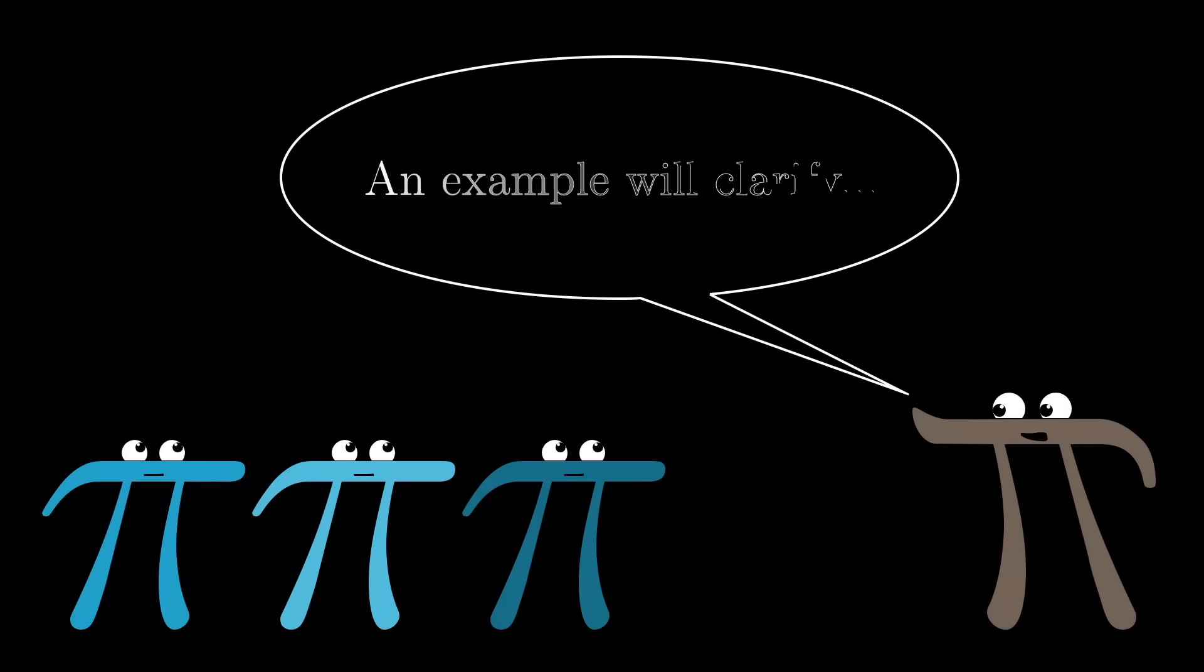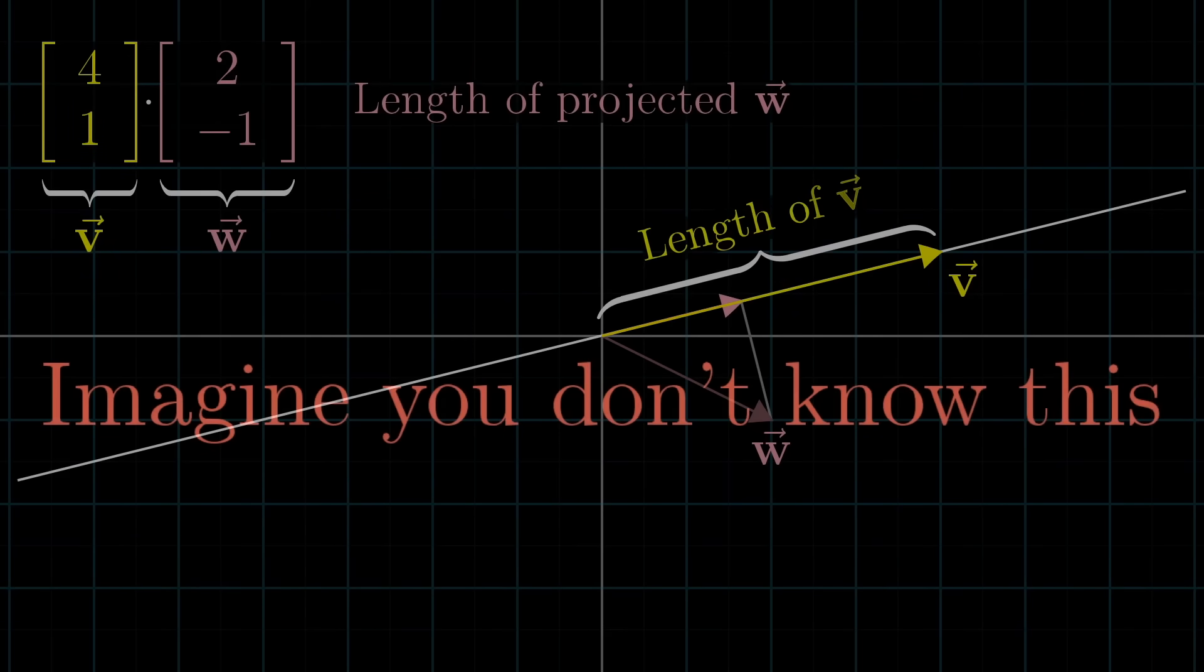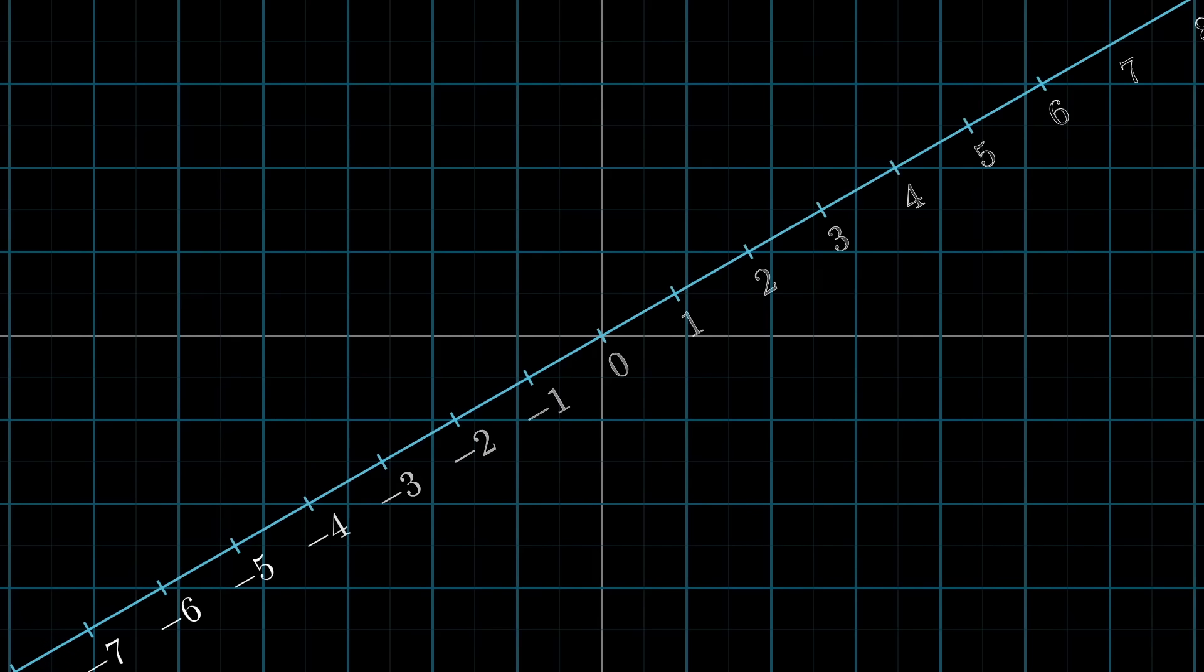Let me show an example that clarifies the significance, and which just so happens to also answer the dot product puzzle from earlier. Unlearn what you have learned, and imagine that you don't already know that the dot product relates to projection. What I'm going to do here is take a copy of the number line and place it diagonally in space somehow, with the number 0 sitting at the origin. Now think of the two-dimensional unit vector, whose tip sits where the number 1 on the number line is. I want to give that guy a name, u-hat. This little guy plays an important role in what's about to happen, so just keep him in the back of your mind.